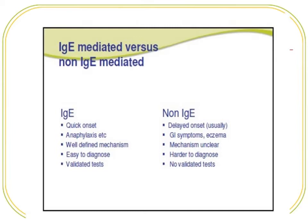In non-IgE mediated response, the gastrointestinal system is usually affected, and eczema or skin rashes may be seen. The mechanisms are unclear, it is harder to diagnose, involves a lengthy process, and there is no validated test for it. This is the key difference between IgE and non-IgE mediated food allergy.